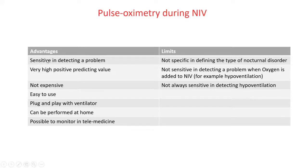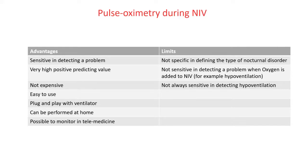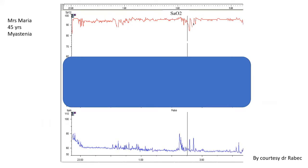To summarize the advantages of pulse oximetry during NIV: it is very sensitive in detecting problems, has a high positive predictive value, is not expensive, easy to use, plug-and-play with the ventilator, can be performed at home, and is possible to monitor via telemedicine. The limits: it is not specific in defining the type of nocturnal disorder, and not sensitive in detecting a problem when oxygen is added to non-invasive ventilation — frequent in COPD patients.